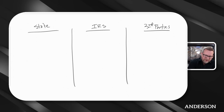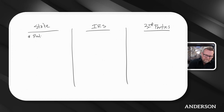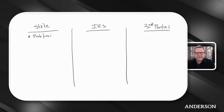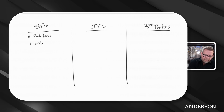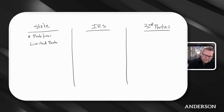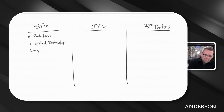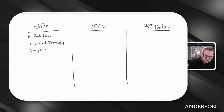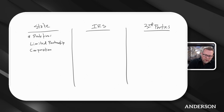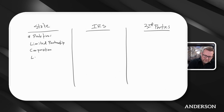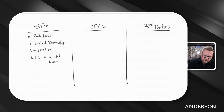First off, the State — you are paying it money for protections, and those protections take the form of entities. So for example, you could have a limited partnership, you could have a corporation, you could have an LLC, which equals limited liability company.